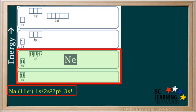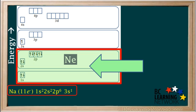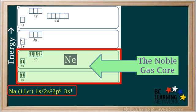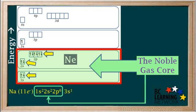Now we'll put a box around the orbitals of sodium that are found in a neutral atom of neon. The neon part of sodium, which consists of the inner electrons, is called the noble gas core — just like the core of an apple is on the inside. The noble gas core is 1s2, 2s2, 2p6, just like a neutral neon atom. We'll put a box around this in sodium's configuration.